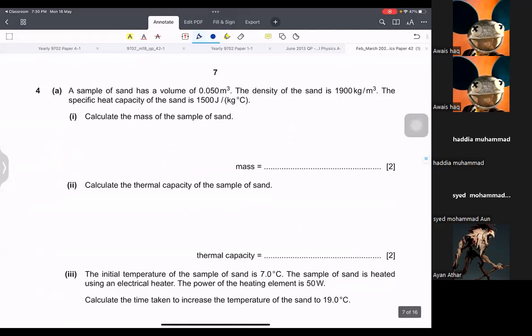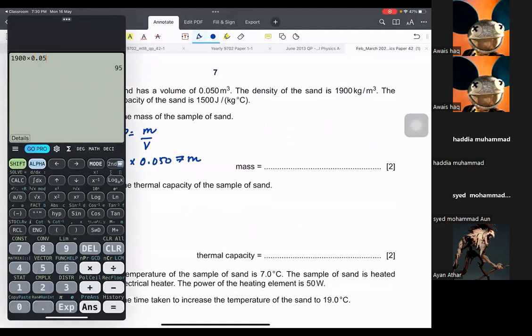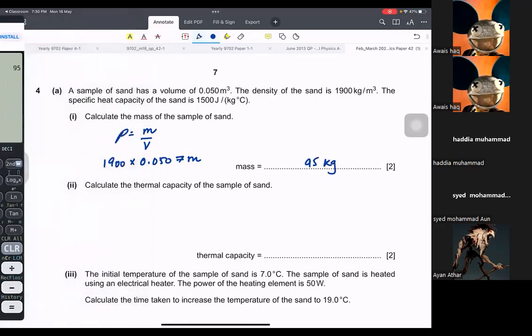Sample of sand has a volume, density and heat capacity. Calculate the mass. Density equals to mass over volume. The density is 1900 times volume is 0.050 equals mass. So that's going to be 95 kilograms.